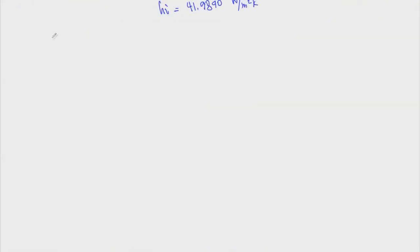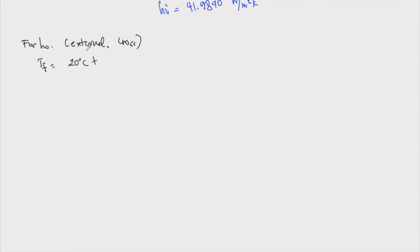For HO — since this is external flow, specifically cross-flow over a cylinder — we need to find the film temperature. The film temperature is simply the average of 20°C (outside) and 200°C (inside), which gives a film temperature of 110°C. We need to evaluate all properties for HO at this film temperature.